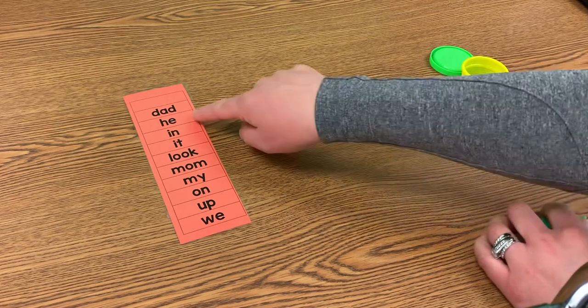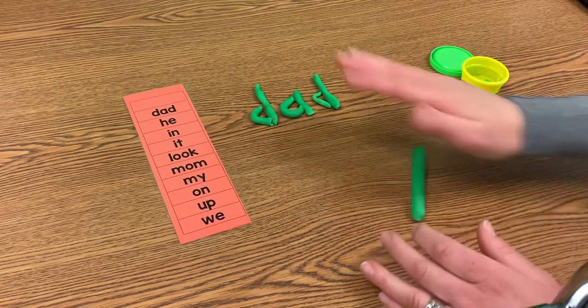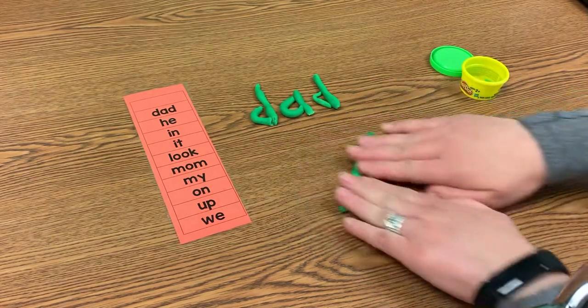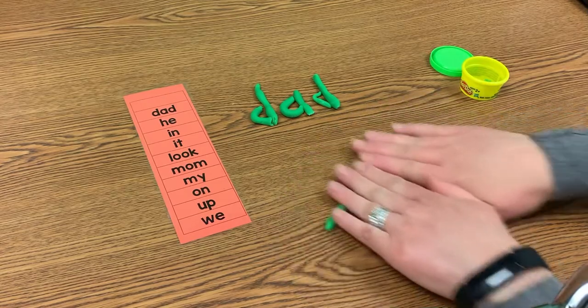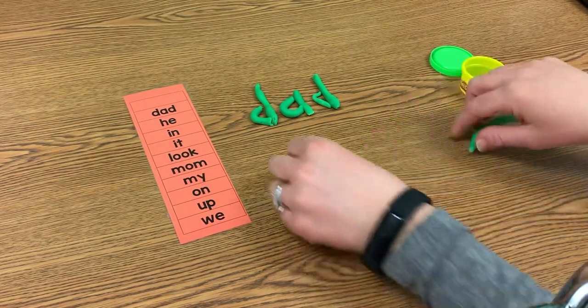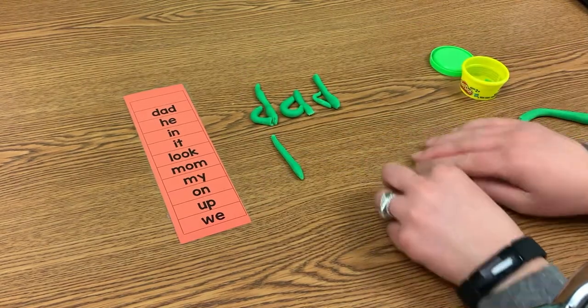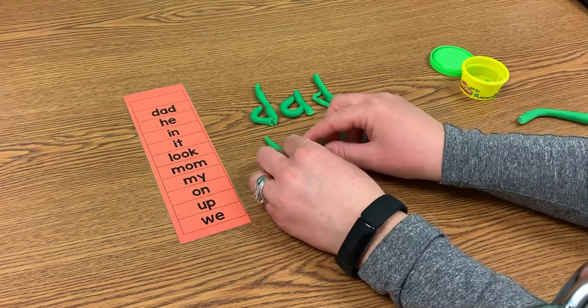Now I'm going to make my next word HE. So again I'm just going to make long snakes, I call them, of Play-Doh. Makes it easier to form the words. So there's the beginning of my H.